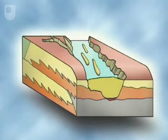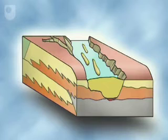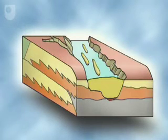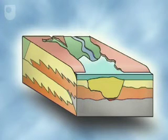Once sea level stops falling and starts to rise, the valley is flooded. As accommodation is recreated, the valley becomes an estuary. Tidal conditions prevail because the tidal wave is amplified by the erosional topography. Flooding continues and a complex series of estuarine sub-environments exist.